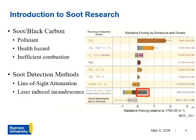Introduction to soot research. Why is soot research important? Soot, sometimes called black carbon, is of interest as a pollutant contributing to climate change, with the third highest radiative forcing effect behind carbon dioxide and methane, according to the Intergovernmental Panel on Climate Change. Soot can also be a health hazard — it is listed as a group 1 carcinogen, a serious issue in long-term exposure scenarios.